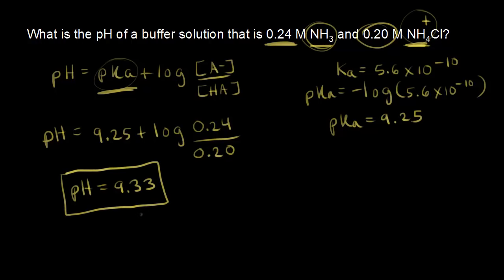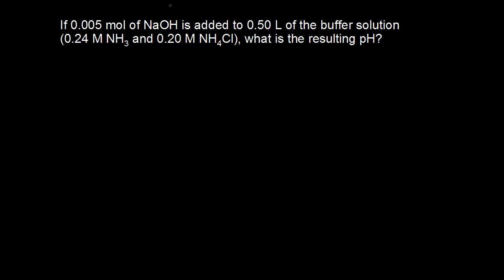Remember this pH of 9.33, because we're going to compare what happens when you add acid and when you add base. Our next problem is adding base to our buffer solution to see what that does to the pH.